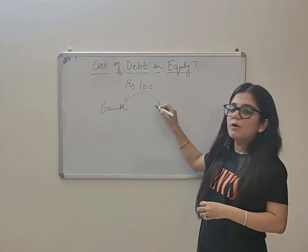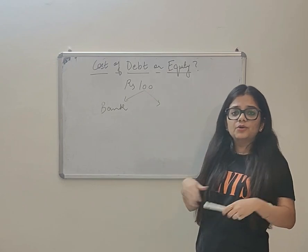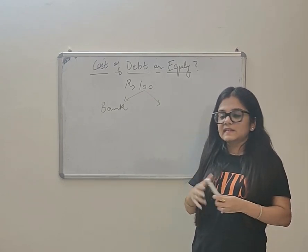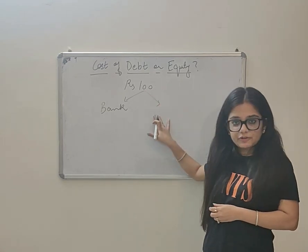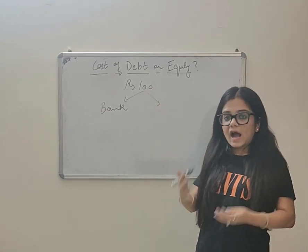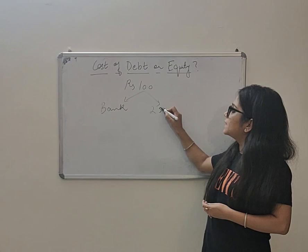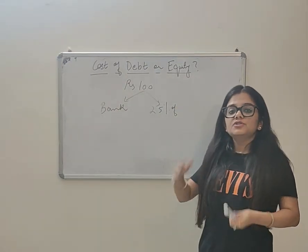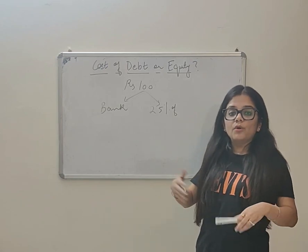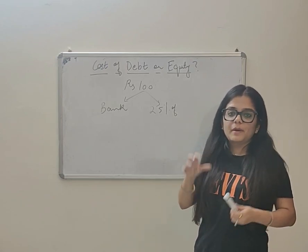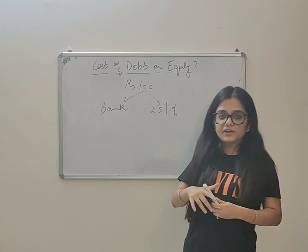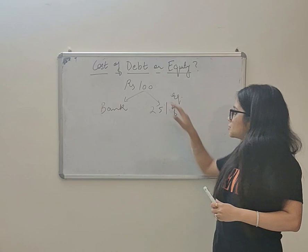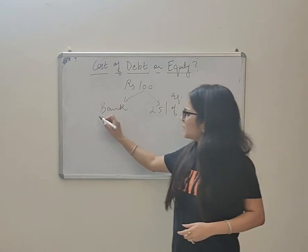Second option is this company can approach an entity or person and say, you give me 100 rupees and in return I will sell my 25 percent ownership to you. This means you will be 25 percent owner of my company and you give me 100 rupees. This is called raising through equity shares.